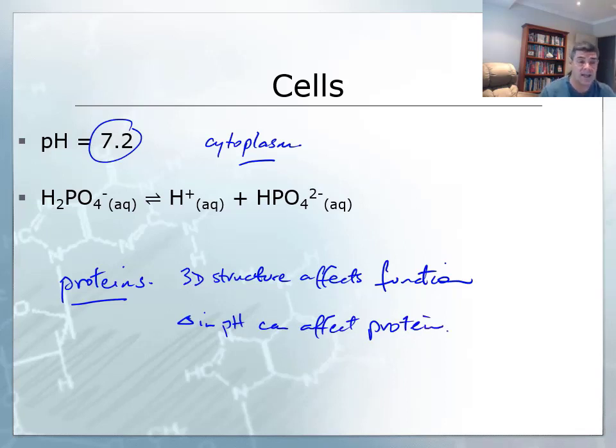So again, it's very important that any additional hydrogen ions or reduction in hydrogen ions are countered as quickly and effectively as possible, so that the pH of the cytoplasm doesn't change too drastically and affect these proteins.